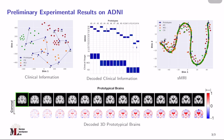From the plot of the difference, we could observe that each of the prototypical brains has distinct characteristics and follows the morphological changes or progressions of AD to some degree. For instance, it has the enlargement of the ventricle, as well as atrophy in regions related to AD, such as the hippocampus or the temporal lobes.